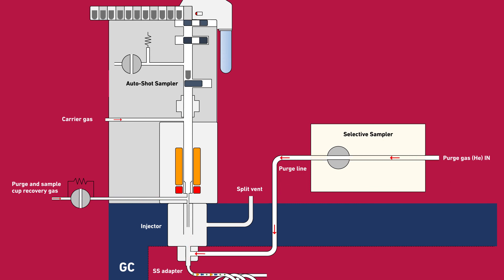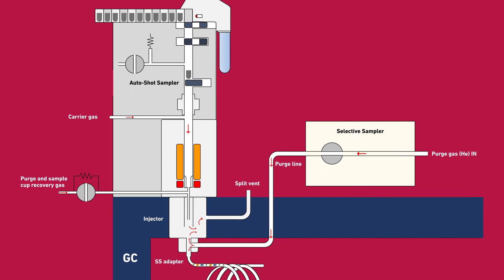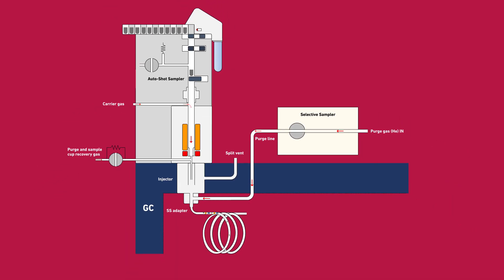The GC starts, and the oven temperature starts to rise. Trapped compounds are separated and detected. Zone B analysis is complete.